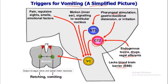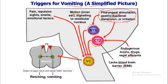Pharyngeal stimulation, gastric and duodenal distension or irritation — all these factors send afferents to the Nucleus Tractus Solitarius. Fibers from the Nucleus Tractus Solitarius and the Chemoreceptor Trigger Zone both go to stimulate the vomiting center. Another stimulus for the vomiting center comes from motion — inner ear signaling to the vestibular nucleus.